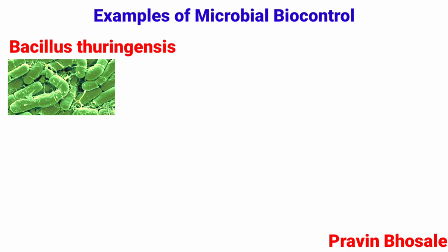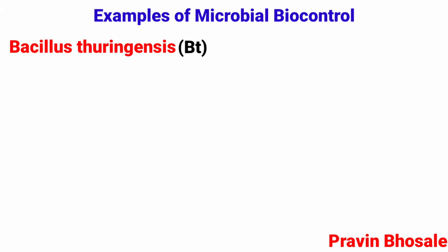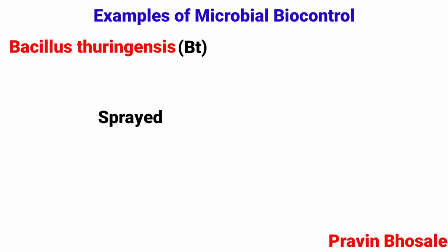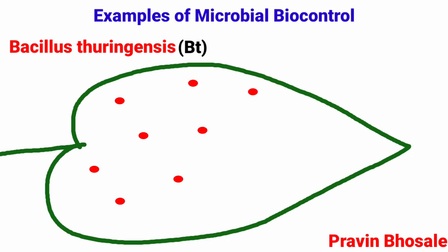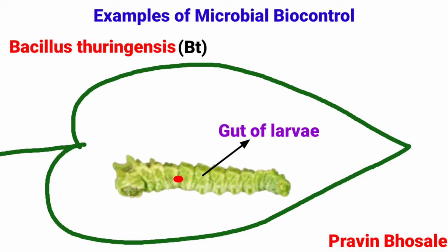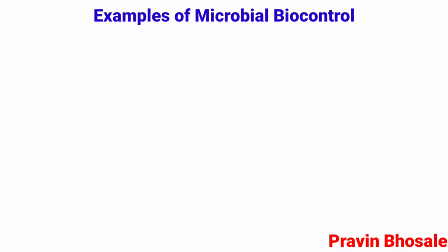First example is Bacillus thuringiensis (BT), used to get rid of butterfly caterpillars. Dried spores of Bacillus thuringiensis are mixed with water and spread onto vulnerable plants such as brassica and fruit trees. These spores are eaten by the insect larvae. In the gut of the larvae, the toxin cryoprotein is released and the larvae are eventually killed.